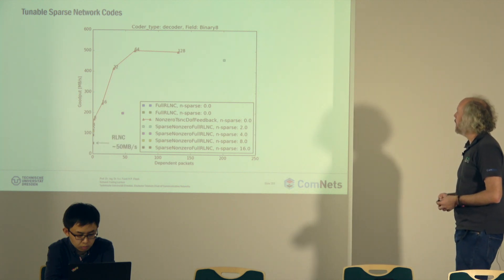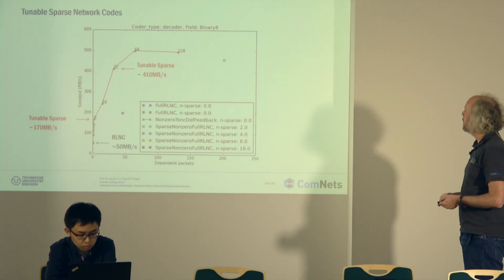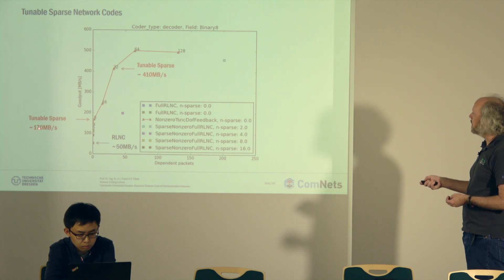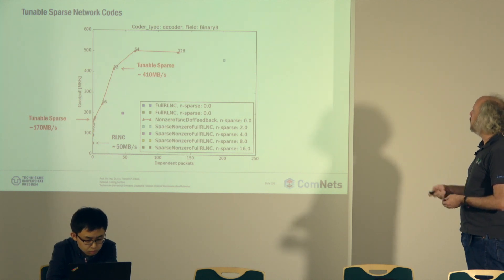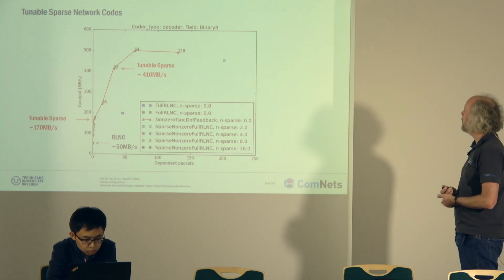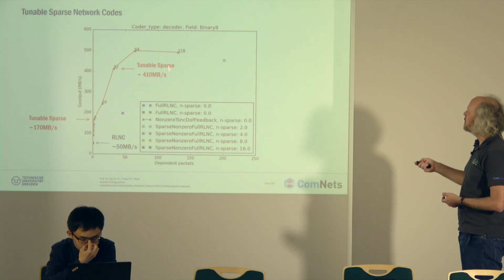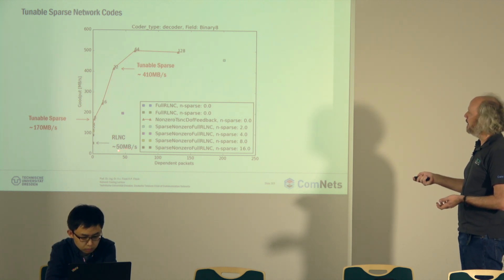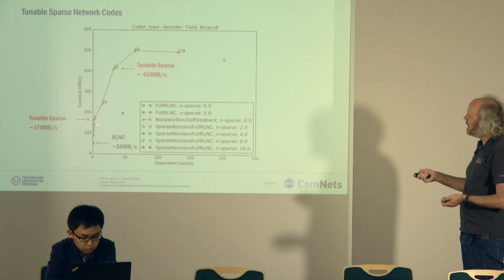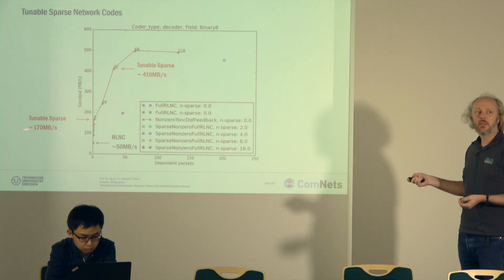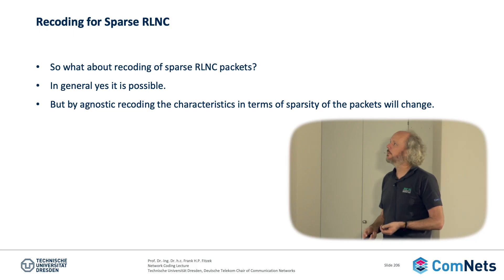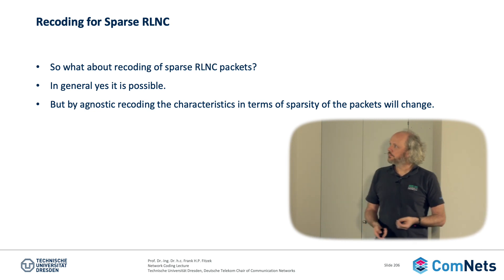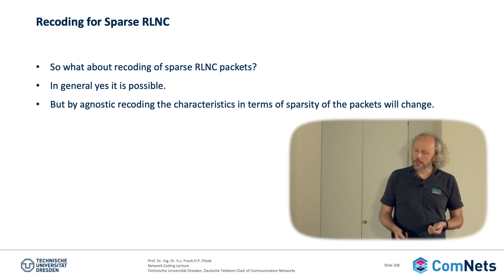There are some values here — these are the tunable sparse factors ranging from 170 megabytes per second up to 410 megabytes per second, compared to the standard RLNC which only has 50. So adding a little bit of sparsity gives a speedup of about 3x, which is quite impressive.